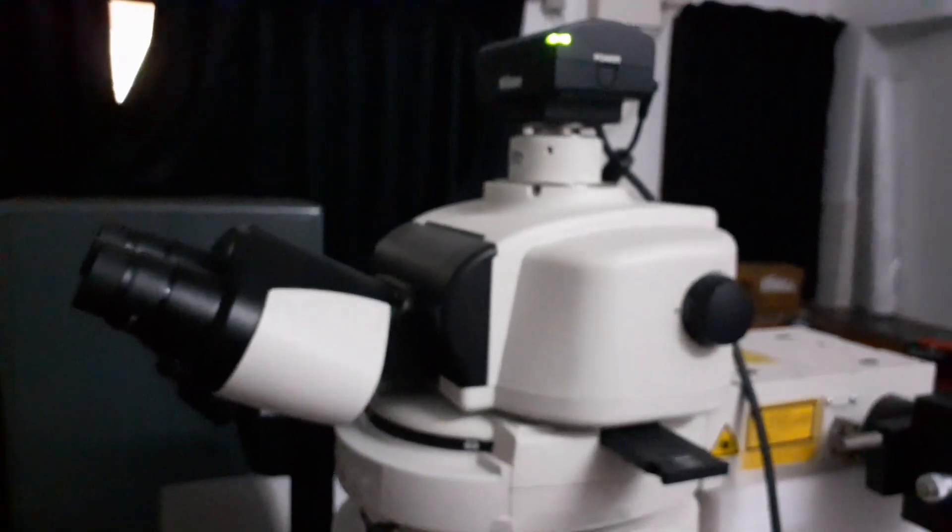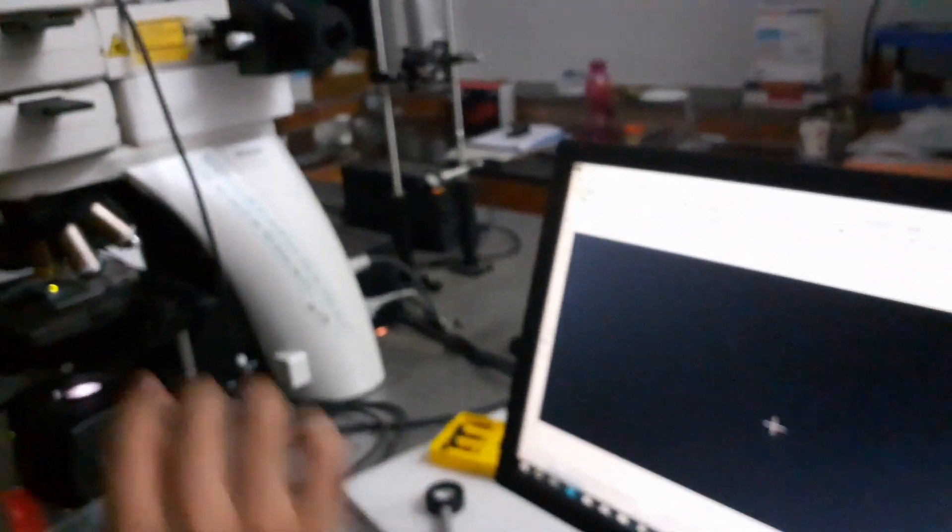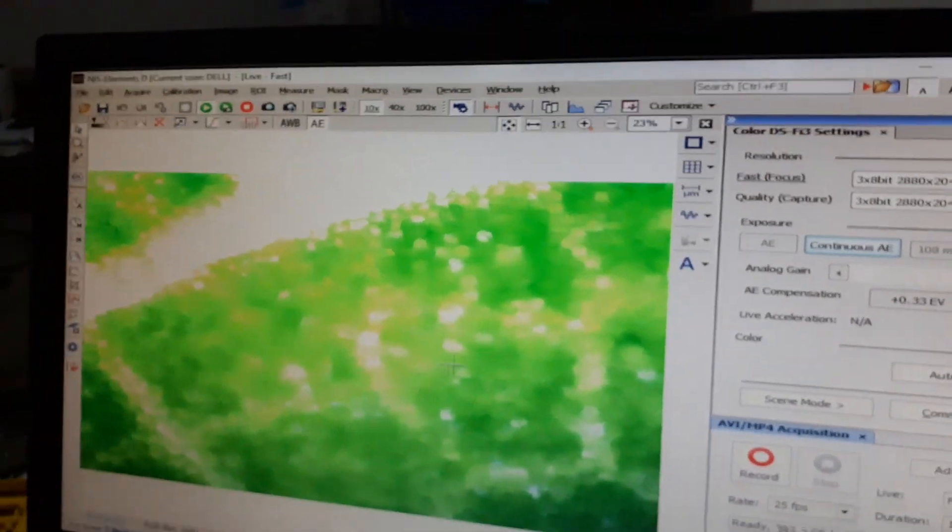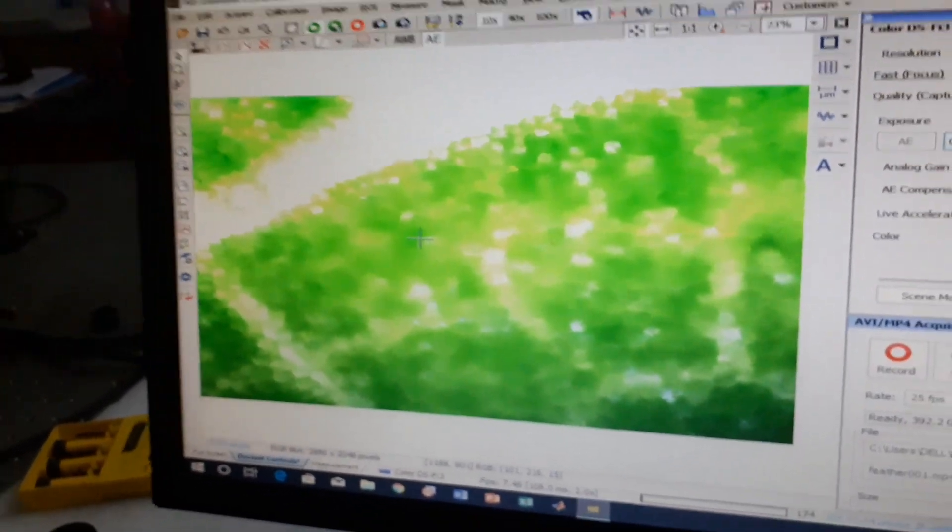So this microscope is connected to the computer and we can see what's happening inside the microscope through this camera. This is the camera and it's connected and we can see what's happening on this screen. You can see something's happening there. As you saw in the microscope, it's not that clear but can I just focus. See.